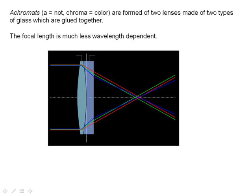The last thing we want to talk about with chromatic aberration is the idea of an achromat. And A is Greek for not, and chroma means color, so an achromat lens is one that is not color sensitive. It's formed of two types of lenses made of two types of glass, which are glued together.